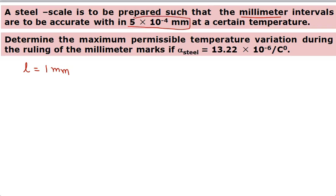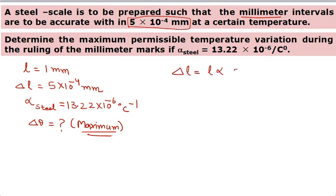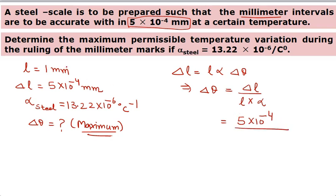The maximum variation is 5×10⁻⁴ mm. We have alpha of steel — a standard value we need to consider — per degree Celsius. We have to find the maximum temperature variation. For delta L we go to the formula: delta L = L × alpha × delta theta.